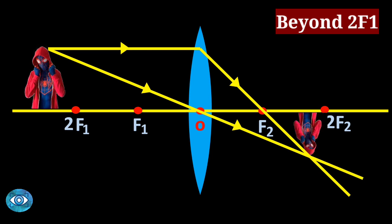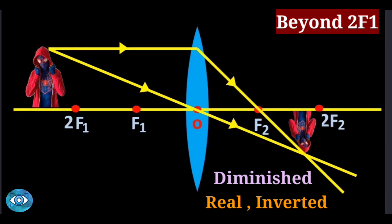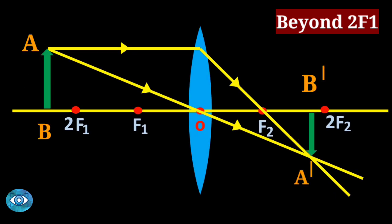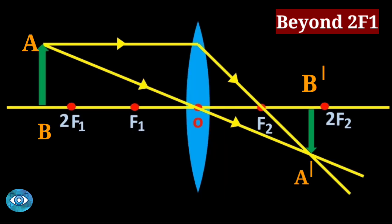The refracted rays meet between f2 and 2f2 — the image is formed here. The size of the image is small, and since it is a real image, it is always inverted. In the textbook ray diagram, AB is the object and A'B' is the inverted image.